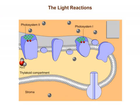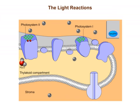Energized electrons from photosystem I are passed down an electron transport chain and added to NADP+ to form NADPH.